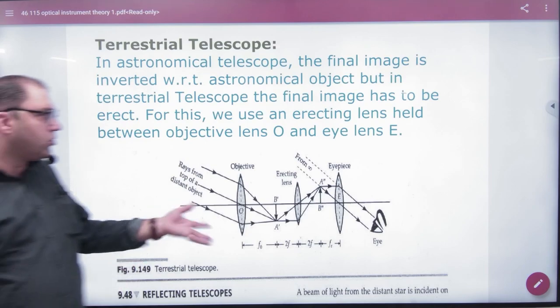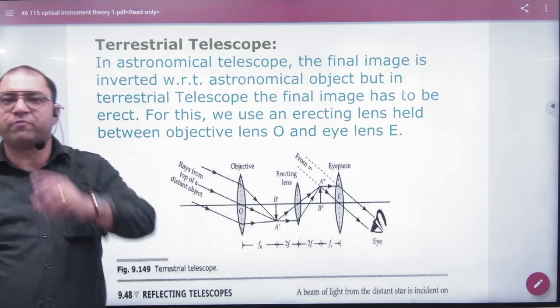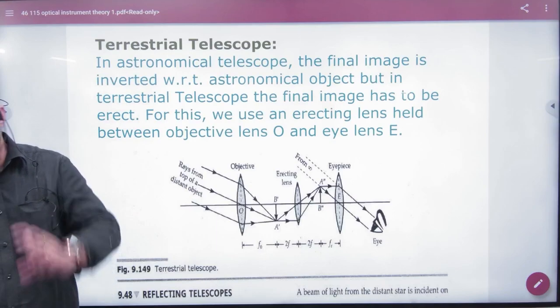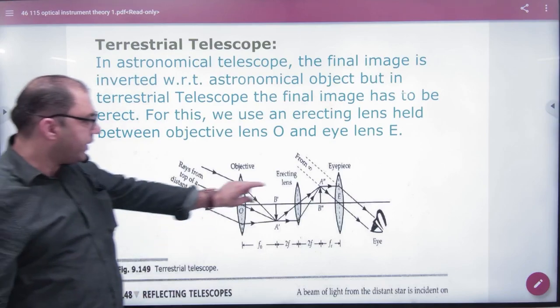Let me explain this for a moment. In a normal astronomical telescope, the image is always inverted. But in a terrestrial telescope, we use an extra lens, an erecting lens, to make the image upright.